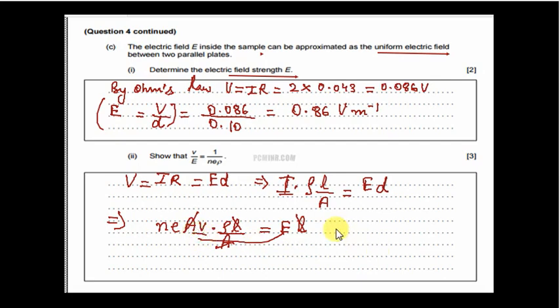And that will automatically give us V, that small V the drift velocity, upon E is equal to 1 upon n e rho. So we have proved it.